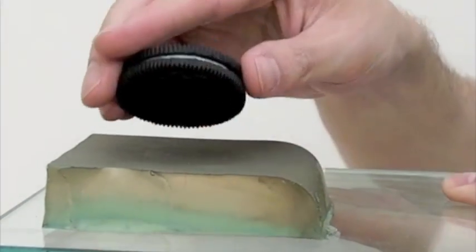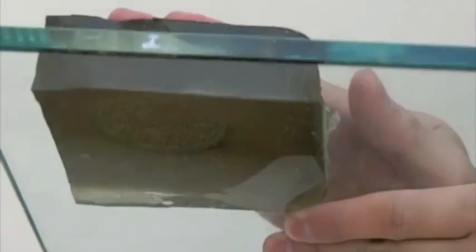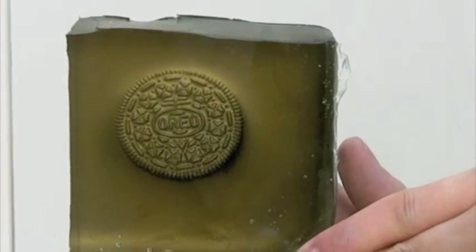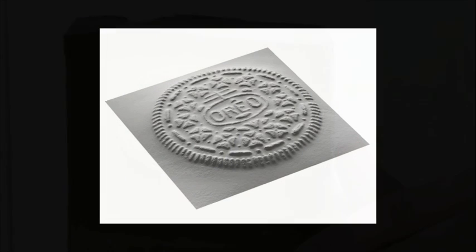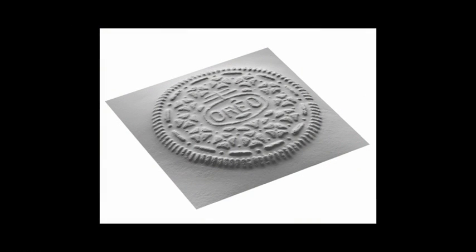When an object is pressed into the sensor, the reflective skin conforms to the shape of the object, transforming its color and reflectance properties. This transformation allows us to capture the geometry of the surface in a single image.